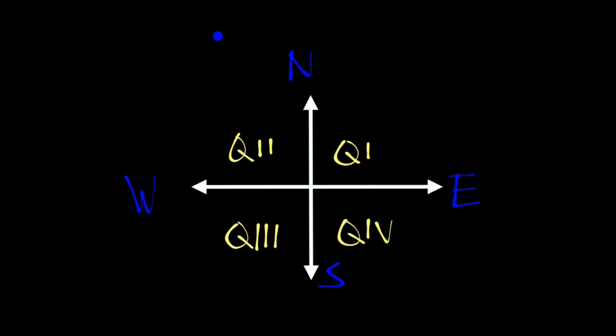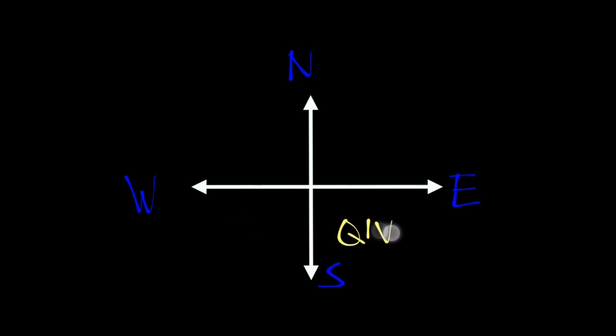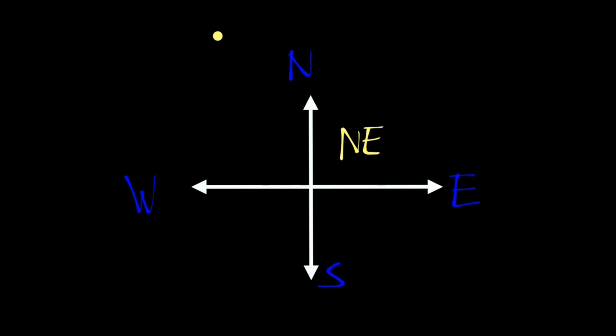Going back to the quadrants, we now have quadrant 1 as northeast, quadrant 2 as northwest, quadrant 3 as southwest, and quadrant 4 as southeast.